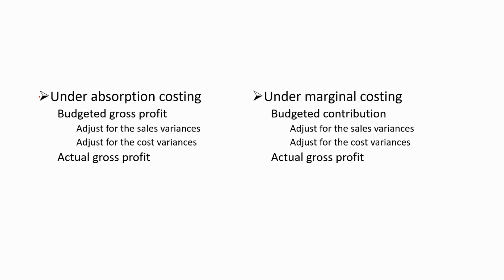To recap what we have learned: under absorption costing, we start with the budgeted gross profit, adjust first using sales variances, then using cost variances, to finally arrive at the actual gross profit. Under marginal costing, we start with the budgeted contribution, adjust for the sales variances, then adjust for the cost variances, to finally arrive at the actual gross profit. This is how we reconcile the budgeted profits under both marginal costing and absorption costing using the variances.